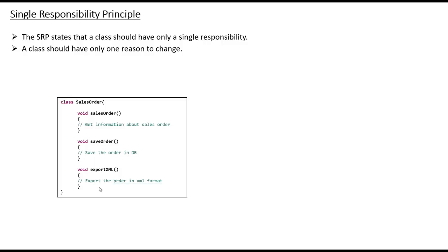If you closely look at this particular class, it does not have a single responsibility — it actually has three responsibilities: giving the information, exporting data to XML format, and saving orders to a database. Now suppose tomorrow I change my DB from MySQL to MongoDB or PostgreSQL — I have to edit this class. Also, if I want reports in CSV format instead of XML, again I have to change this class. If I need more information in the sales order, again I have to change this class. Changing non-correlated things forces changes to this class, clearly violating the Single Responsibility Principle.